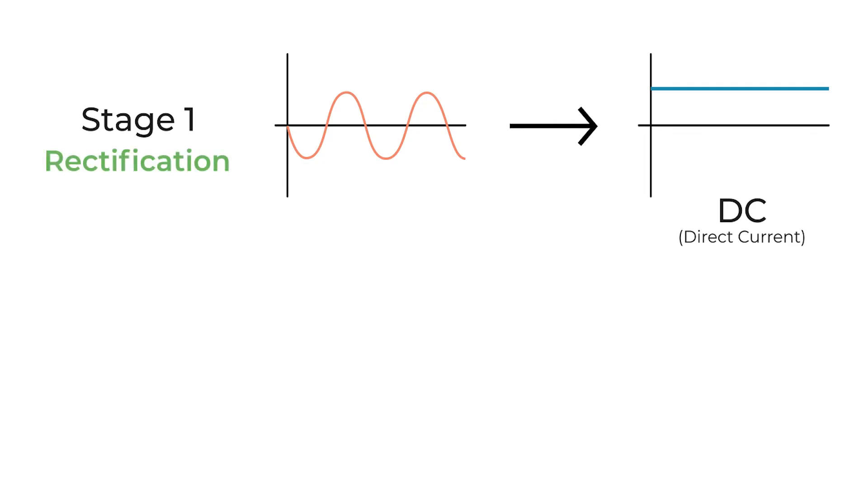In the first stage, the electricity coming from the outlet is converted to DC, or direct current. This process is called rectification.